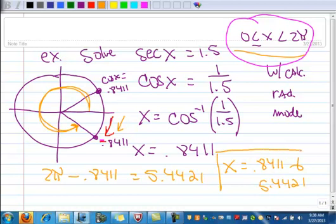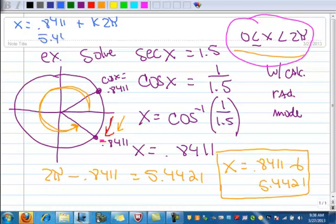And then one more note. In a lot of these problems, it will ask you for all solutions or might ask you to express this with the periodic property. So for this particular example, you could say 0.8411, and that occurs every time you go around the circle, so plus k times 2π. And then the other one is 5.4421, and you could then say plus k times 2π.